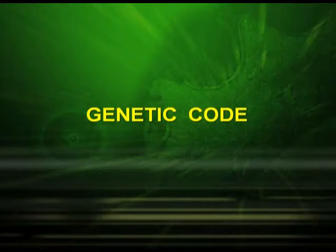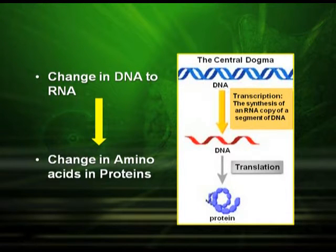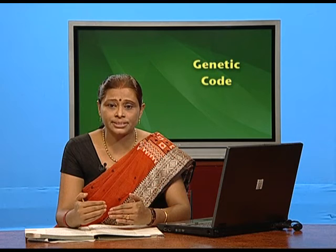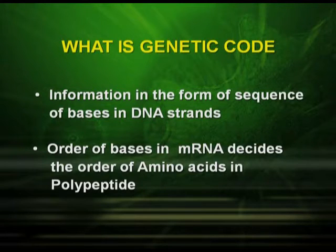Now let us study about the genetic code. Referring back to the central dogma: DNA forms RNA and RNA forms protein. From DNA to RNA is transcription, and from RNA to protein is translation. If there is a change in the DNA or RNA, there will be a change in the amino acid in proteins. The genetic code is the information in the form of the sequence of bases in DNA strands, and the order of bases in messenger RNA decides the order of amino acids in polypeptides.